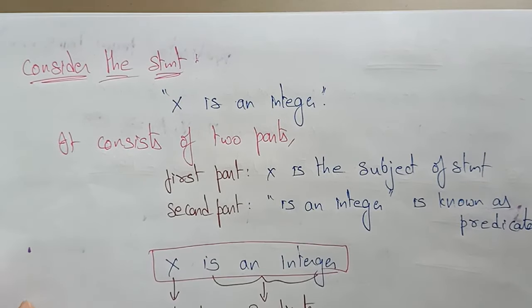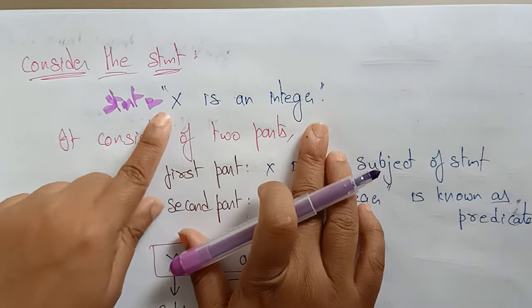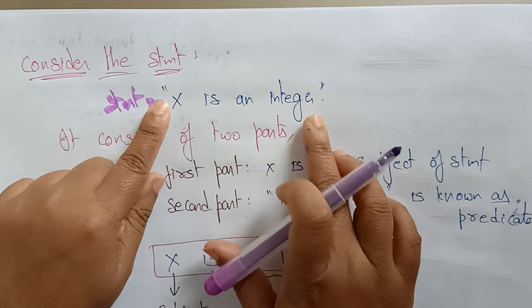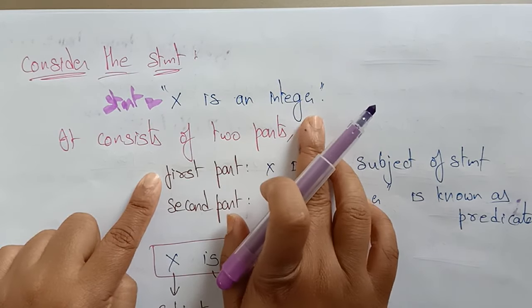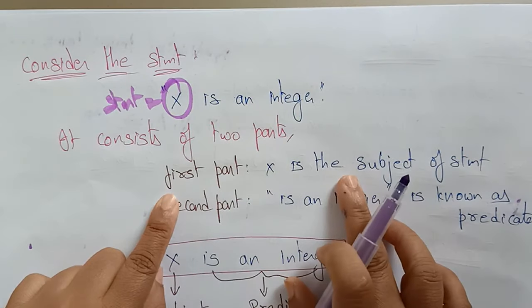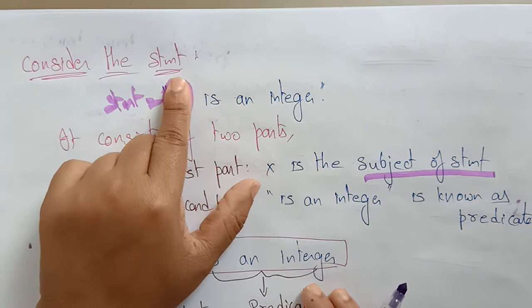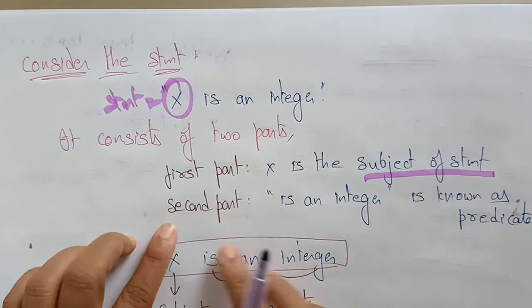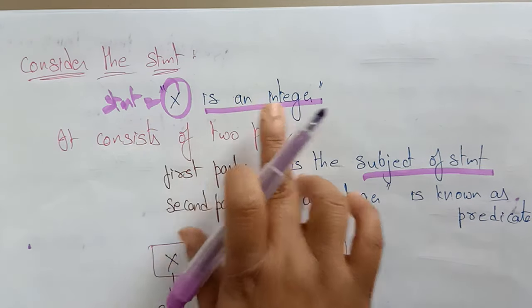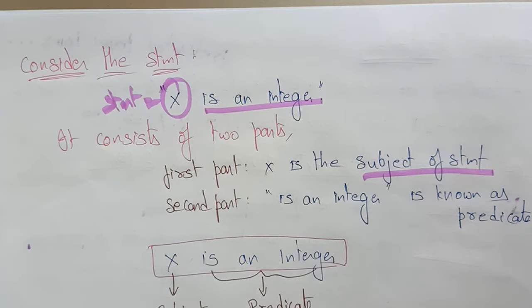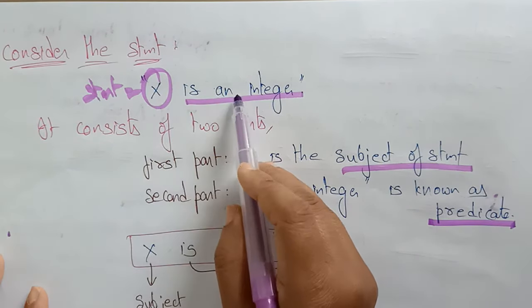Let's see an example to clearly understand subject and predicate. Consider the statement: 'X is an integer.' This statement consists of two parts. The first part is X — X is the subject of the statement because it is the main part. The second part is 'is an integer' — this explains what the subject is, giving information about it. That second part is the predicate.